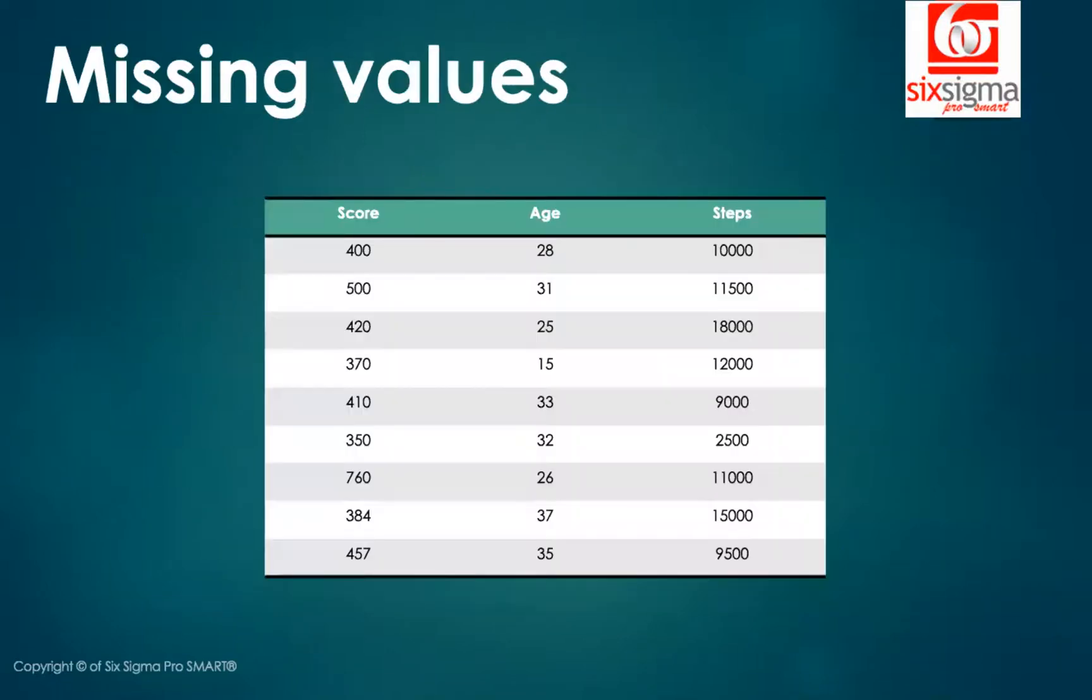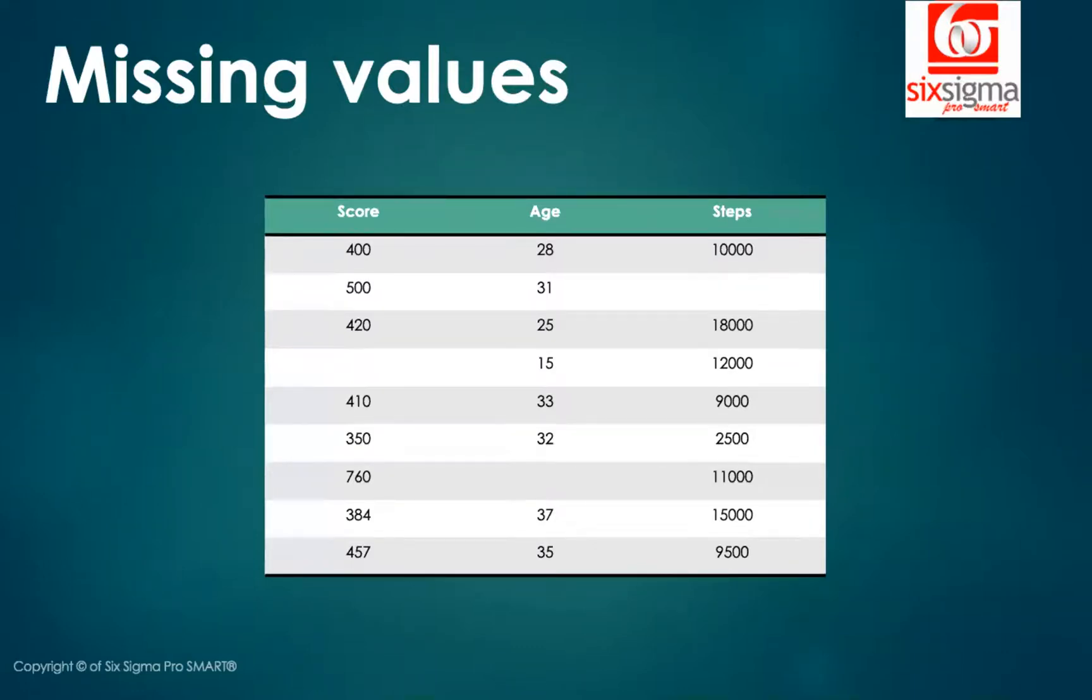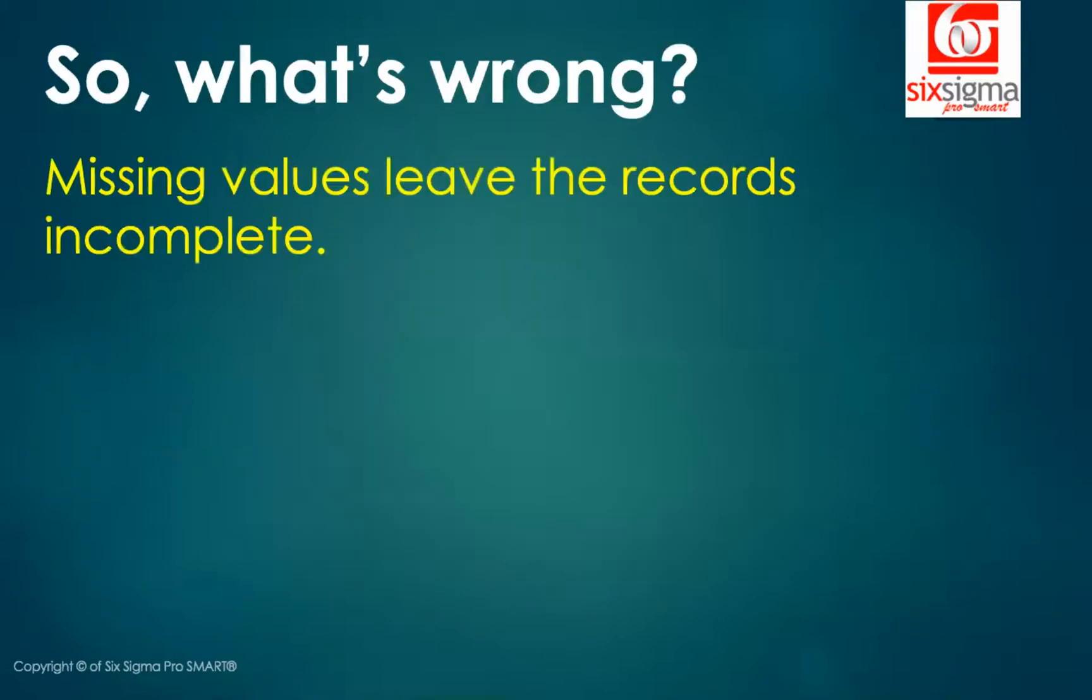The second issue, missing values. We're looking at the data, and the data is like this. So what changed? Of course, we got some missing values. It's very simple. We don't have the data. But we have a concern with this. And what's the concern? What's wrong with this? First of all, missing values leave the records incomplete.